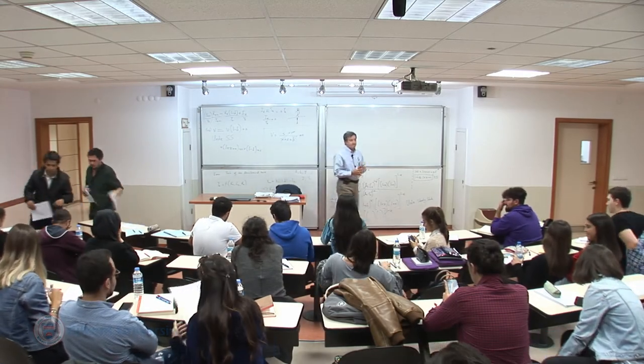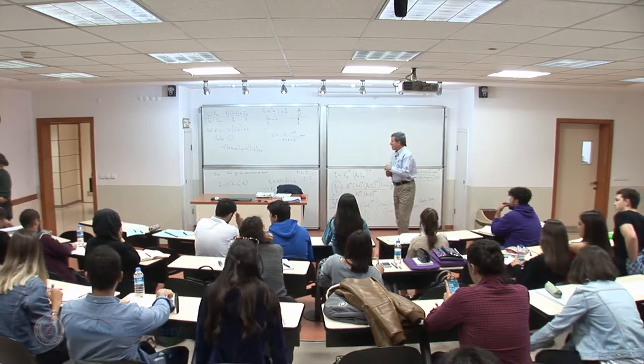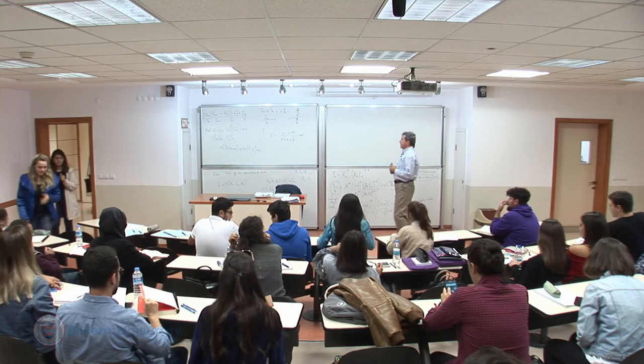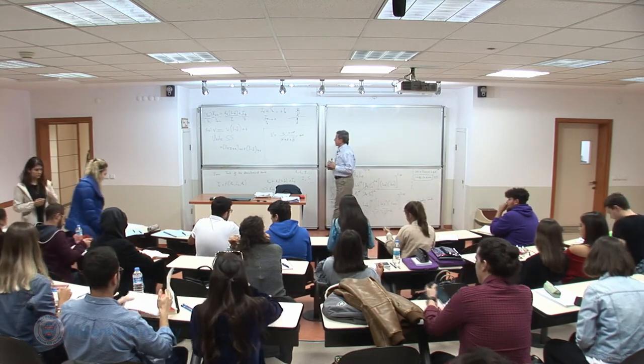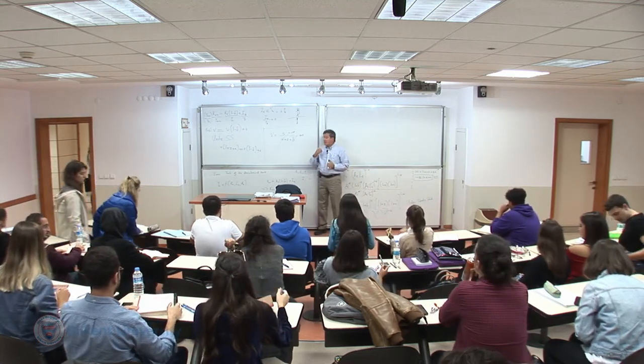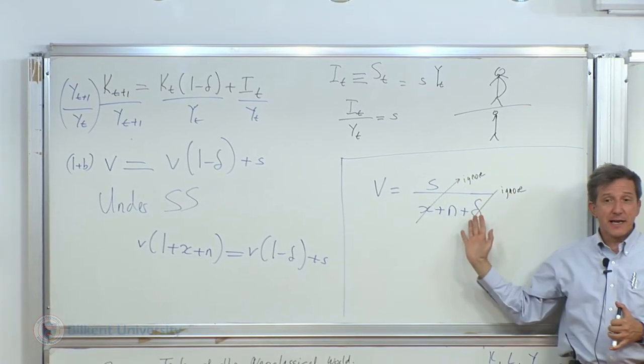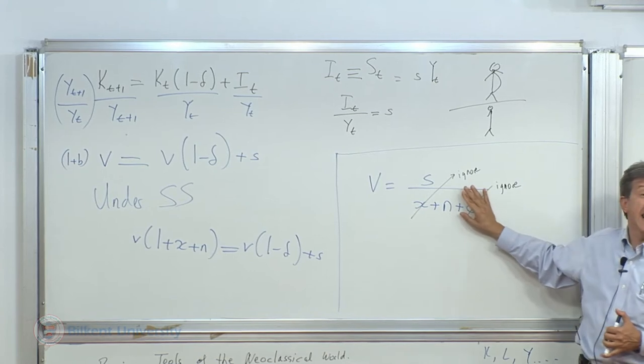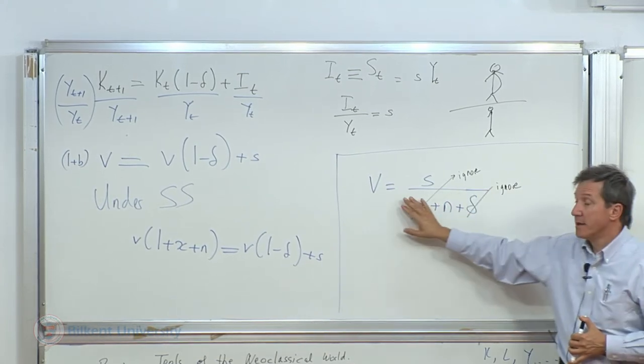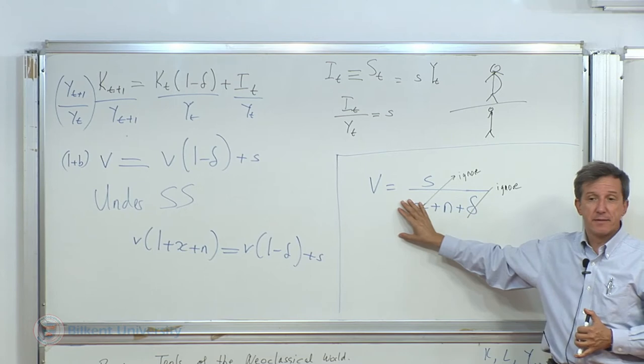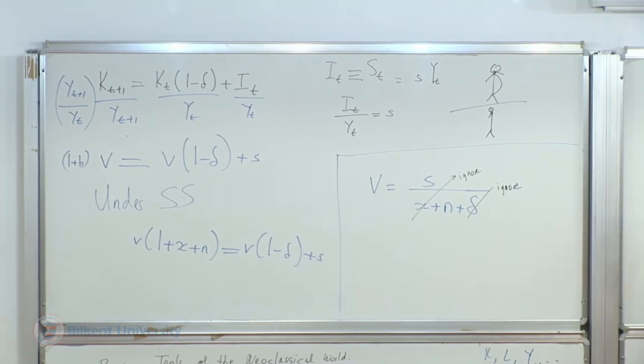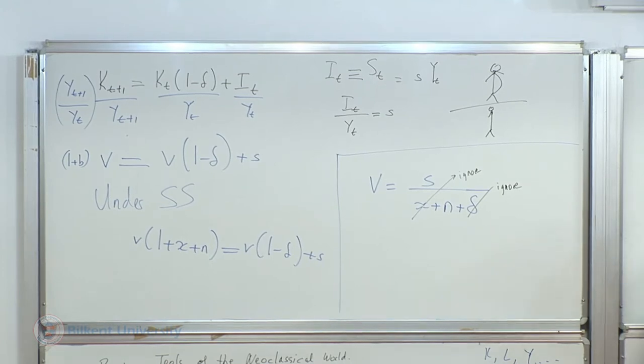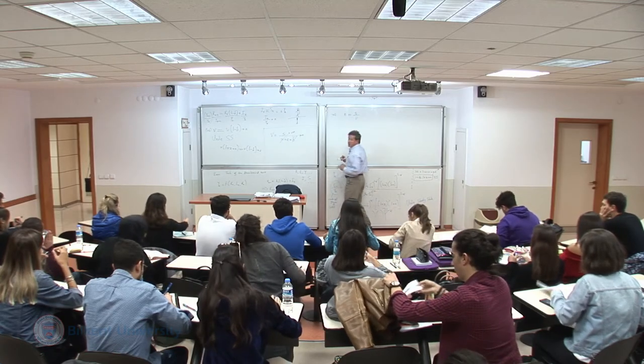Now let's continue making sense of this equation. From these basic relationships, I said that I am going to ignore for the moment depreciation and the x variable. And I'm going to convert this into this form, n is equal to s over v.